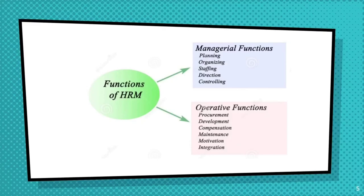The next category is operative functions. First is procurement of employees: recruitment brings the pool of prospective candidates for the organization so that management can select the right candidates from that pool. The second is development, which involves job analysis — describing the nature of a job and specifying human requirements like qualification, skills and work experience needed to perform that job.